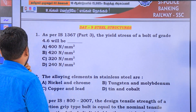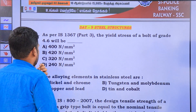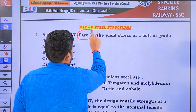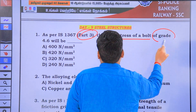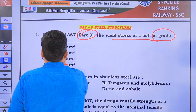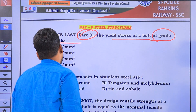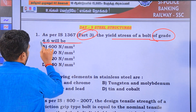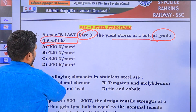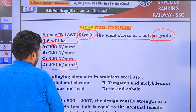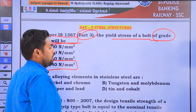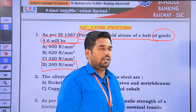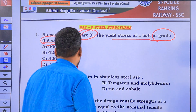Question number 1: As per IS 1367 Part 3, the yield stress of Bolt Grade 4.6 will be — so, the key point is the grade 4.6 — the value is 240 N/mm².